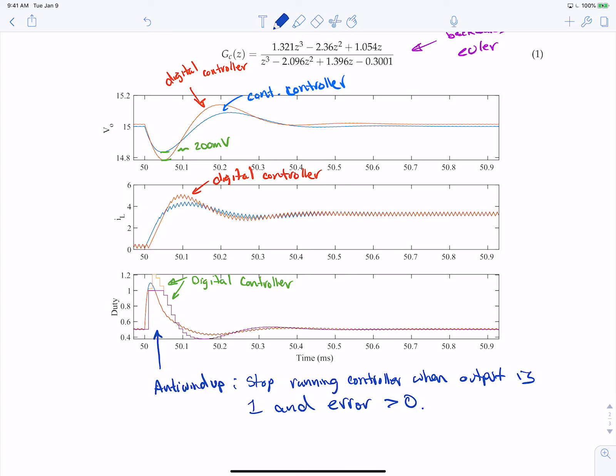And what I mean by running is your controller is still on, I'm just saying don't update the value. Because if your error is greater than 0 and you're already at 1 or past 1 and you update it again, you're going to get some number again larger than 1 or that you already had. So essentially you're stopping the updating of the controller output.